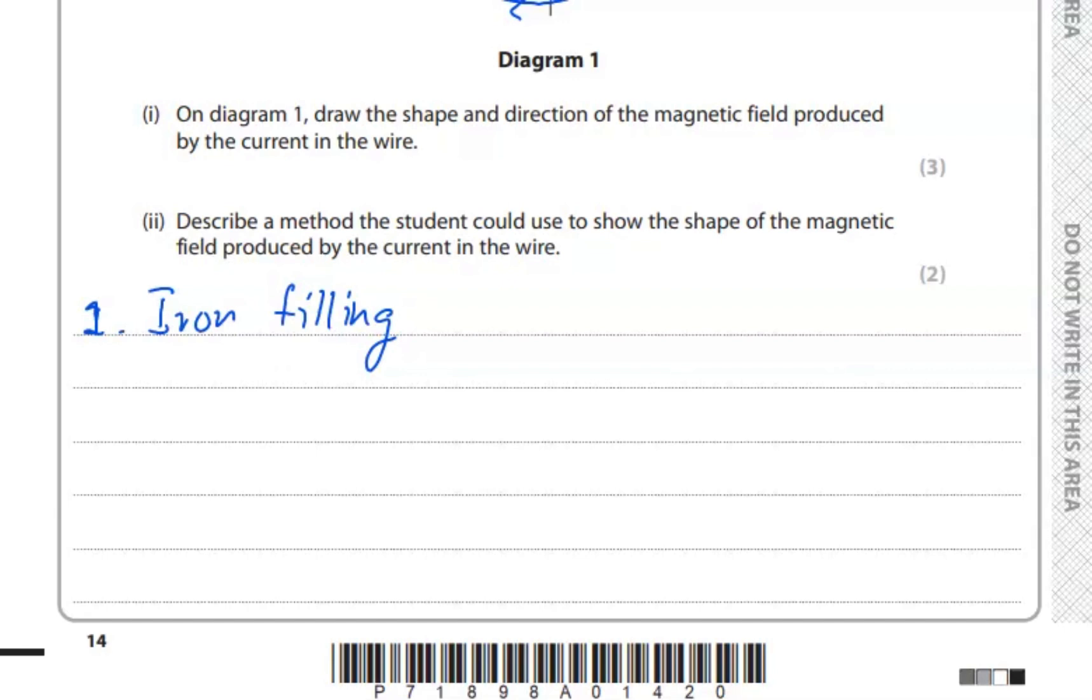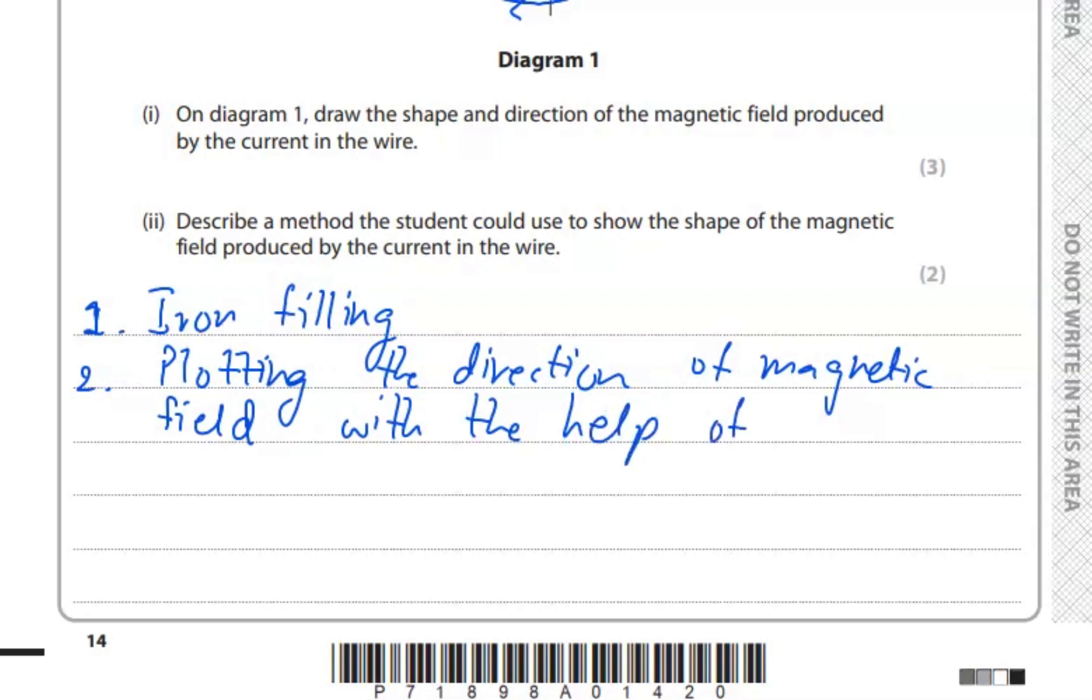And second is plotting the direction of magnetic field with the help of a compass.